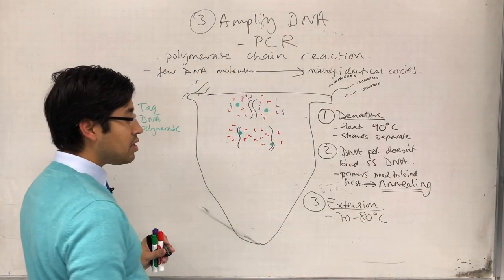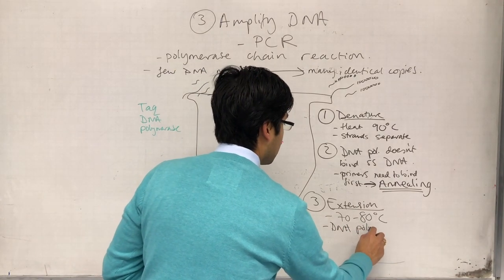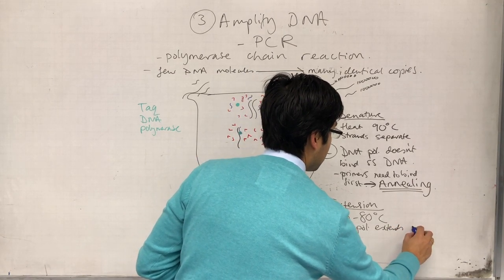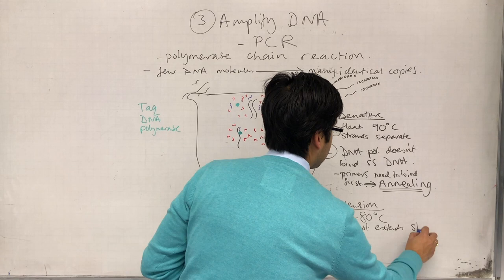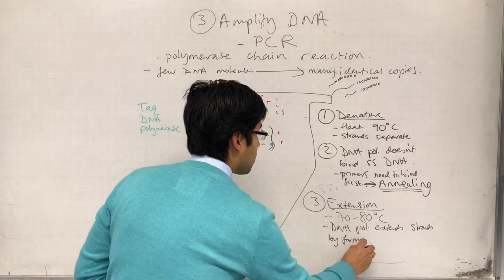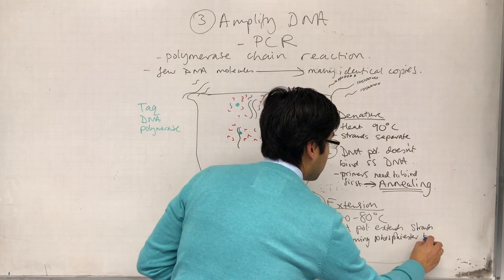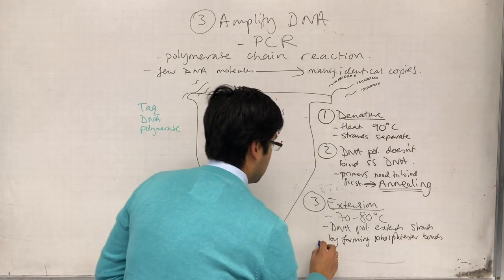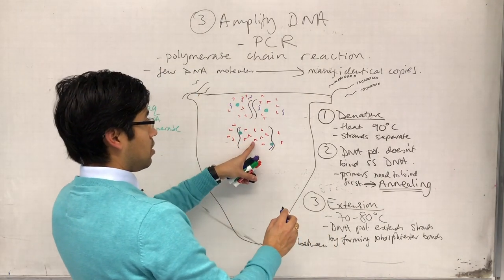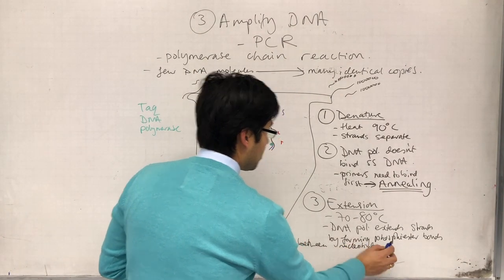But in order to get this TAQ polymerase to work, we need to raise the temperature to TAQ polymerase's optimum temperature, which is around 70 to 80 degrees. So, we raise the temperature to 70 to 80 degrees, and DNA polymerase, or TAQ polymerase, extends the strands, extends the strands by forming the phosphodiester bonds, the phosphodiester bonds between the nucleotides.